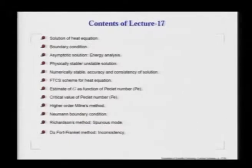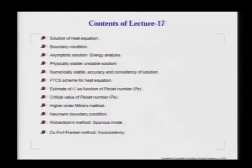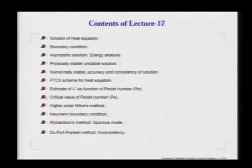In the context of the heat equation, we will begin in the same historic manner in which the subject developed, by introducing the forward in time, center in space scheme — or FTCS scheme. For this FTCS scheme, using our spectral analysis, we will obtain an estimate for the numerical amplification factor, which is a function of spatial and time steps given in terms of a number we call the Peclet number. We will figure out the critical value of the Peclet number for a particular numerical method, and identify specific ranges over which solutions will have different qualitative behaviors.